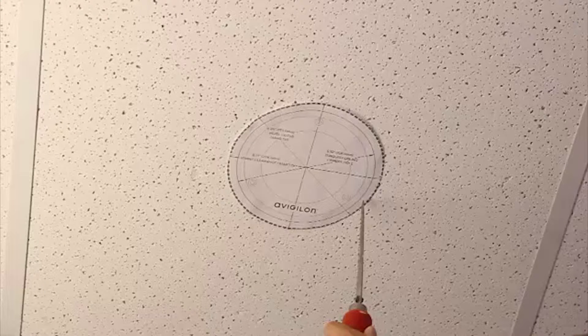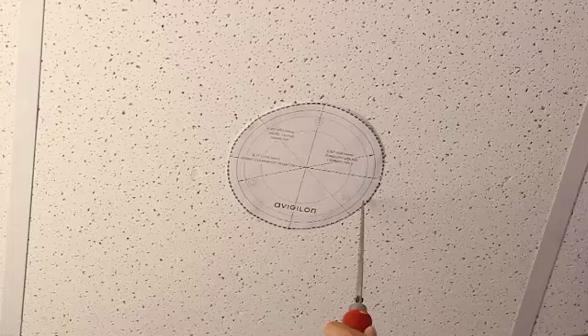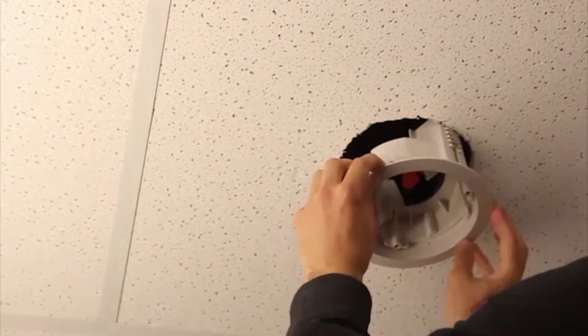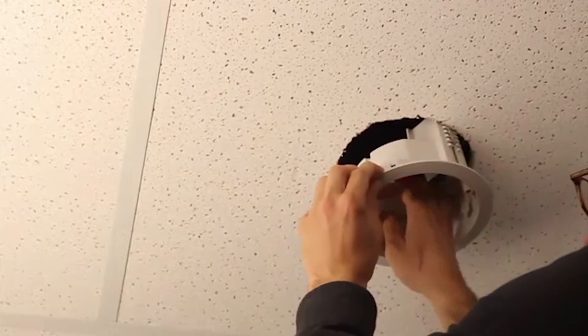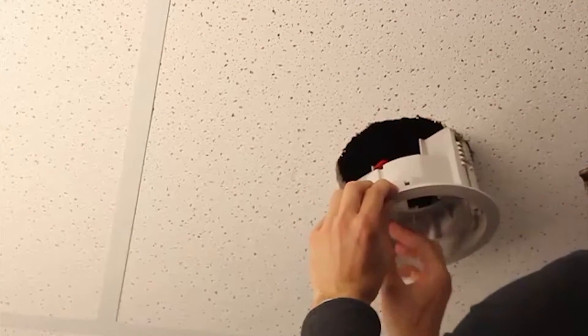Start by using the in-ceiling mounting template to cut an entry hole for the camera into the ceiling. Next, insert the in-ceiling mounting adapter into the entry hole, then pull the required cable through the adapter.